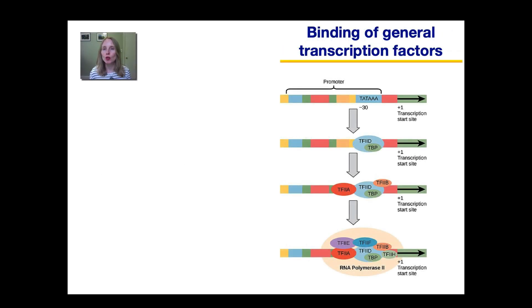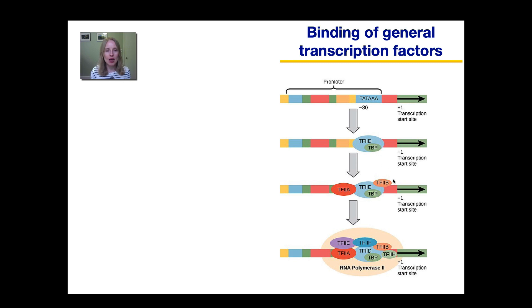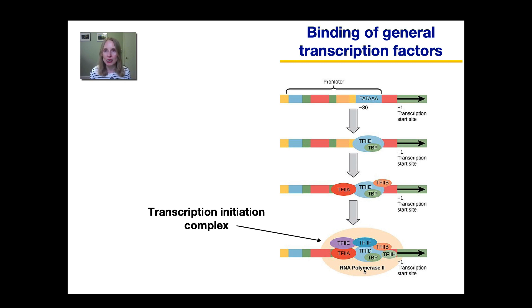This picture shows how the general transcription factors bind to the promoter. Transcription factors recognize very specific DNA sequences — they look for certain nucleotide letters in the DNA and bind there. Many eukaryotic promoters have what's called the TATA box, named because the nucleotides T-A-T-A are found there. First, two general transcription factors bind to the TATA box, then they recruit additional transcription factors, and this entire complex recruits RNA polymerase — forming what is called the transcription initiation complex. Once all these proteins have assembled, RNA polymerase is ready to begin transcription, but it can't do so until the specific transcription factors bind.